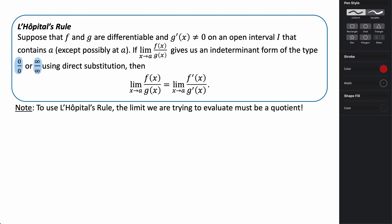The key to this is: in order to use L'Hôpital's rule, the limit that we're trying to evaluate must be a quotient, and it must be a quotient that when we try direct substitution gives us either the form 0 over 0 or infinity over infinity — one of those two indeterminate forms. The infinity over infinity can be any variation: positive infinity divided by negative infinity, negative divided by negative, negative divided by positive — anything like that.